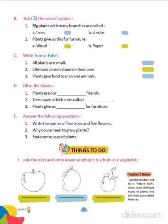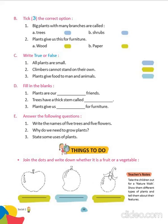Now come to the activity — join the dots. You have to join the dots and write down whether it is a fruit or a vegetable. By joining the first one, we get an apple — an apple is a fruit. By joining the next one, we get a mango — a mango is a fruit. By joining the next one, we get a brinjal — brinjal is a vegetable.